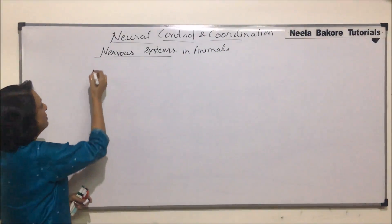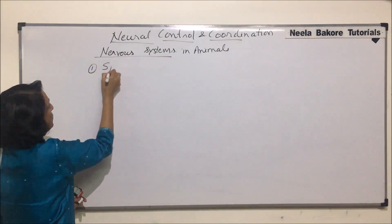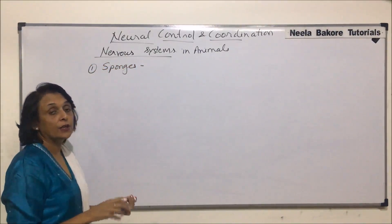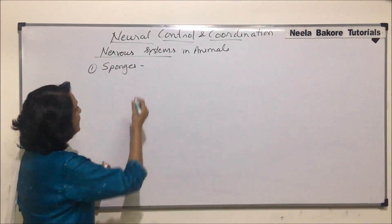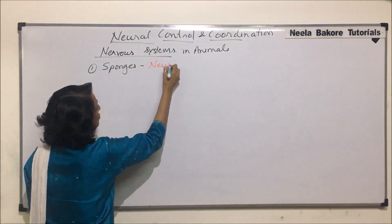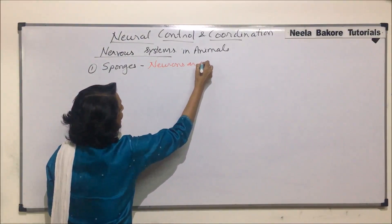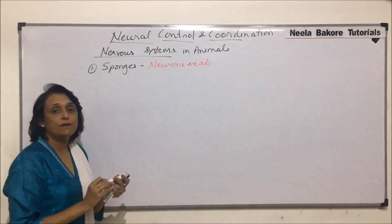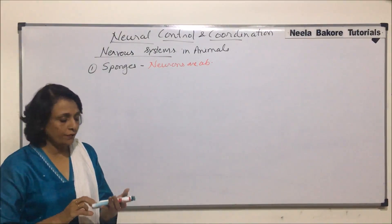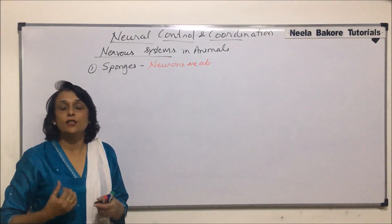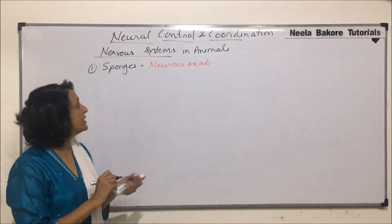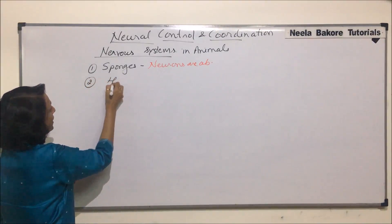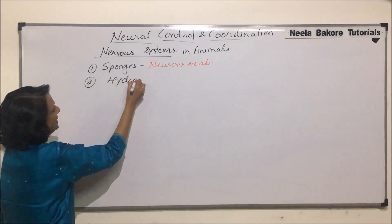In sponges, there are no neurons — neurons are absent. They have some other mechanism of getting the stimulus from the surrounding. That is the case for sponges, the first category.